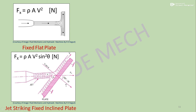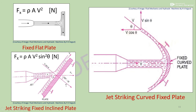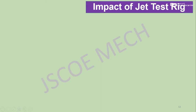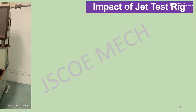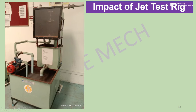For the case of a jet striking a curved fixed plate, the formula is ρAv²(1 + cosθ) Newtons, where θ is the angle made by the jet at the outlet with respect to the horizontal direction of the jet. Now we will see about the impact of jet test rig. This is the test rig in the lab.